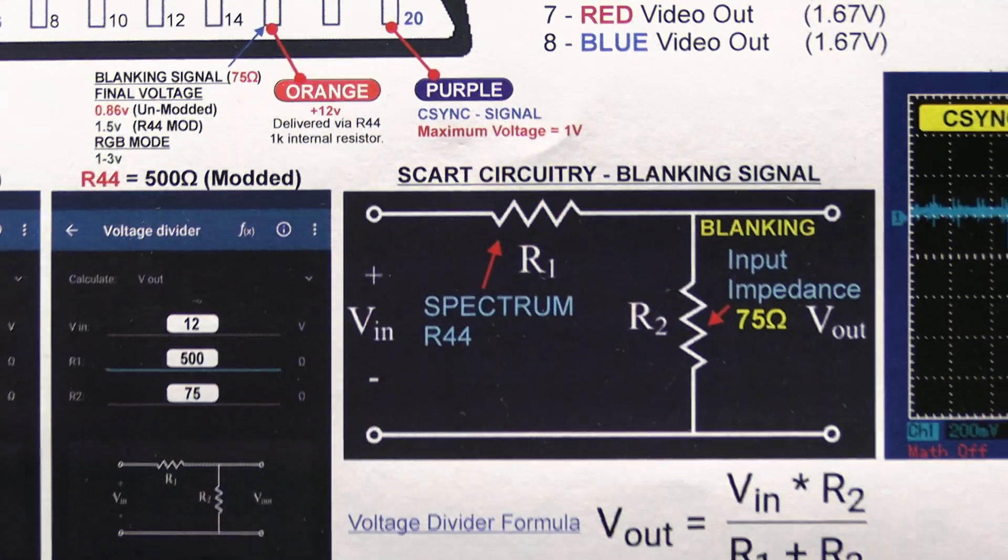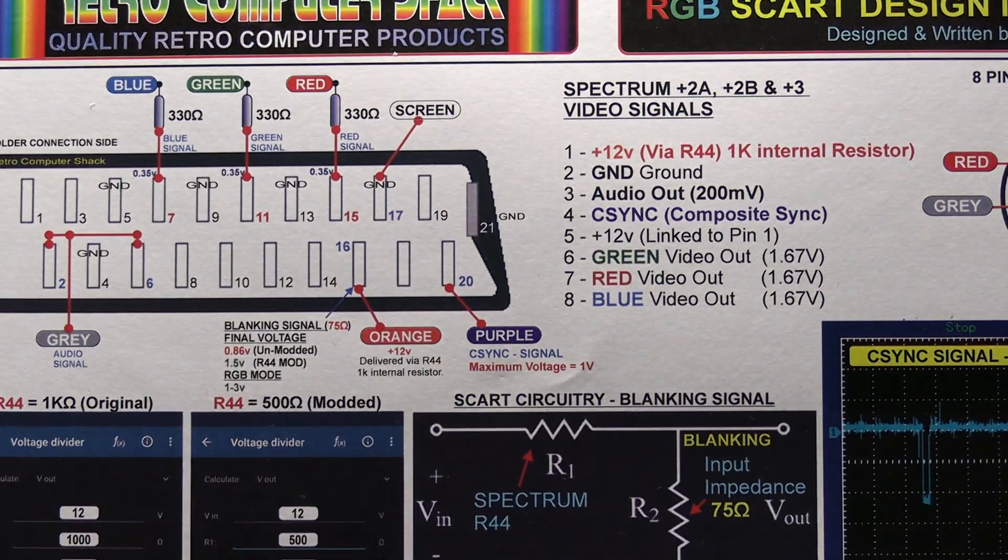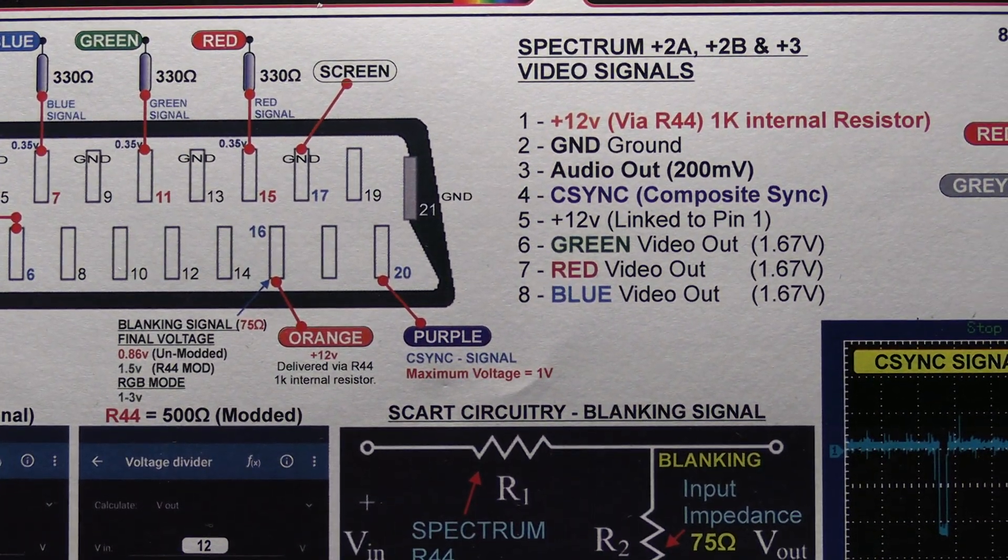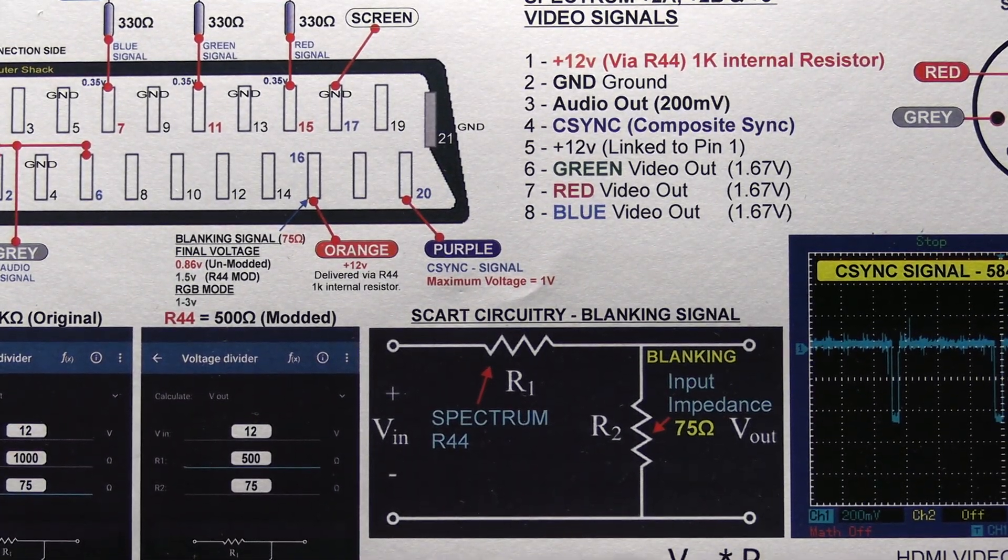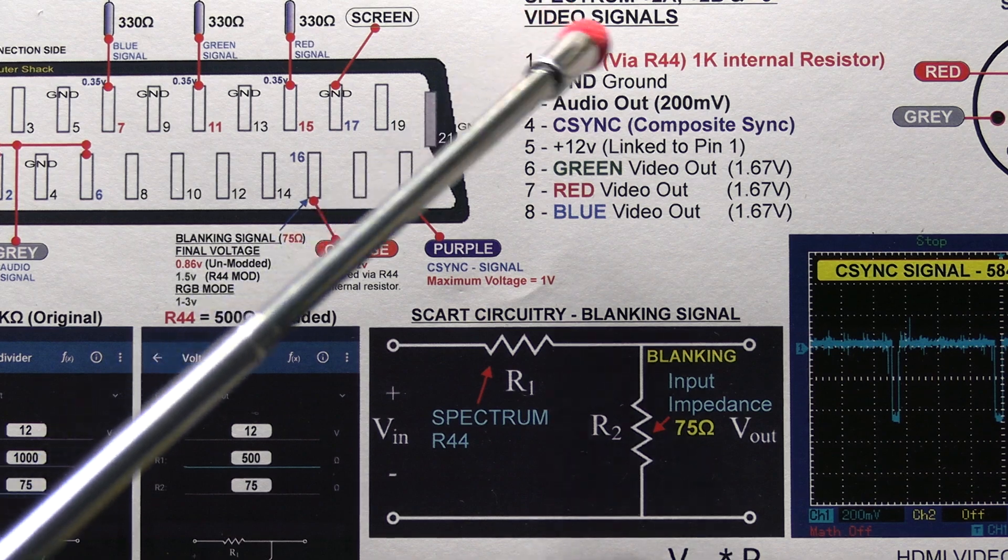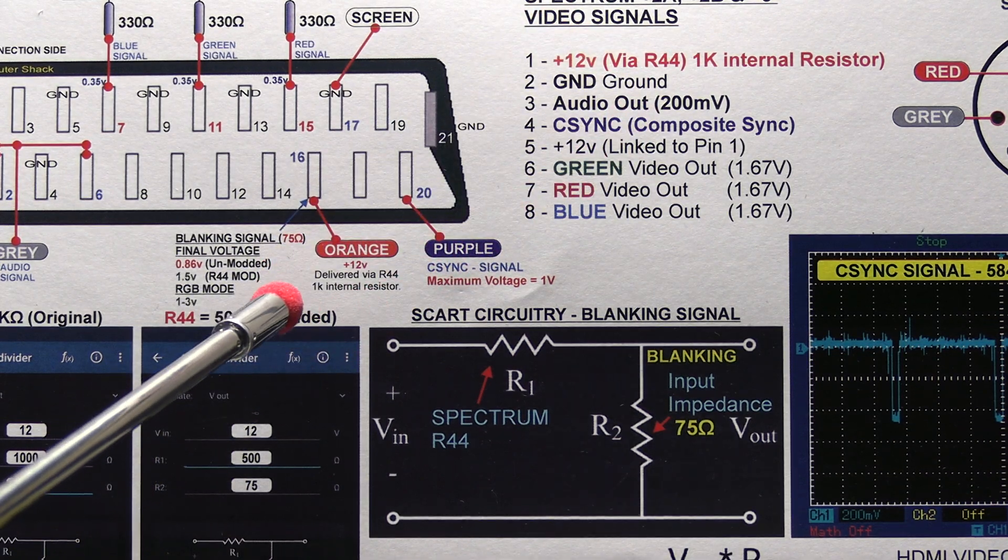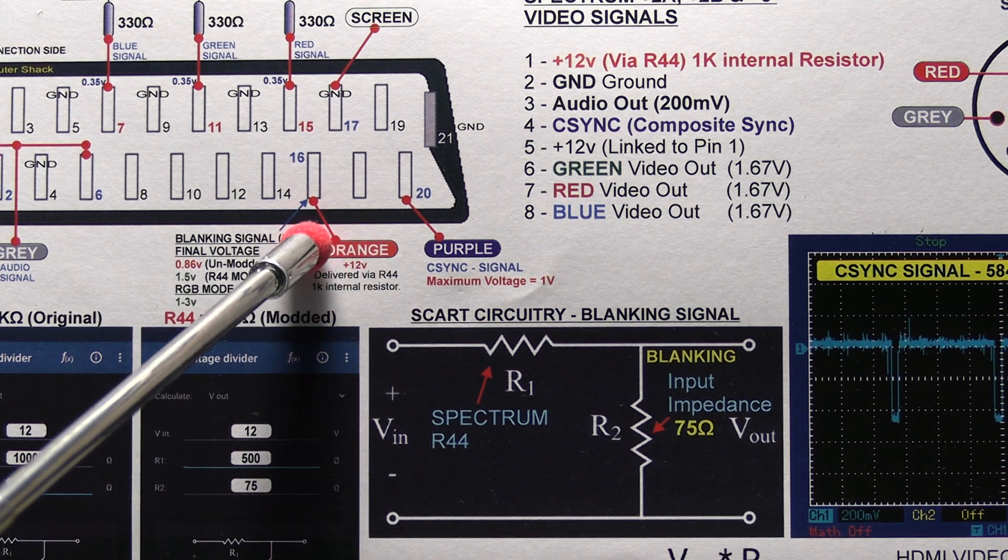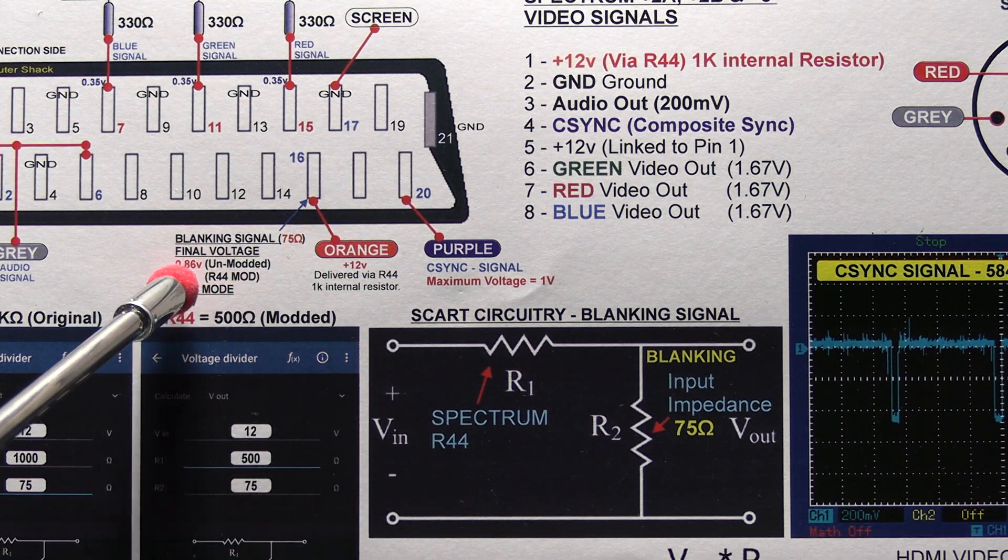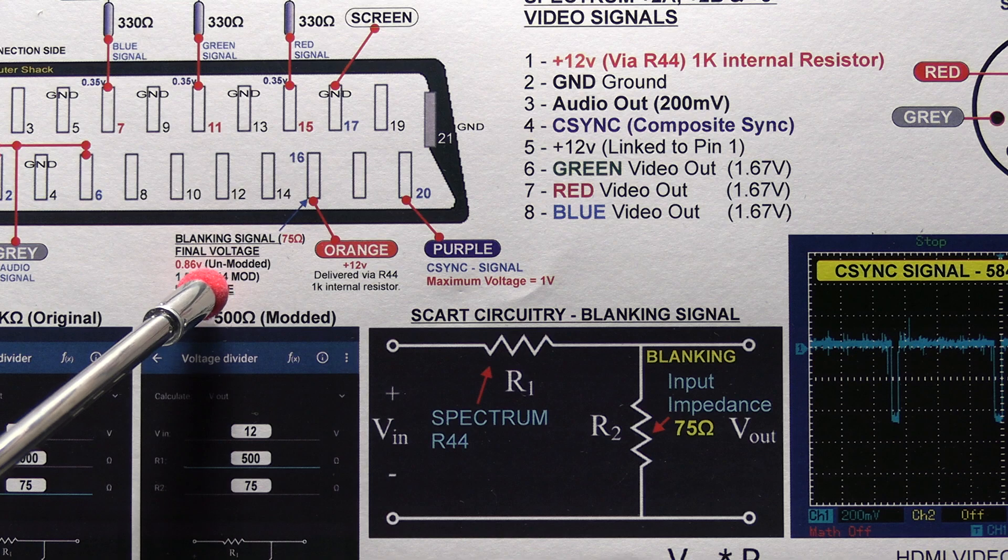So the reason for this is even though the Spectrum outputs 12 volts from pin 1, which is basically fed into pin 16, which is the blanking signal, the actual voltage that's received on pin 16 is about 0.86 volts.